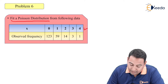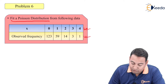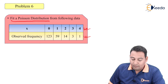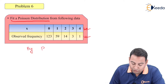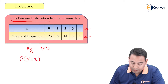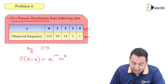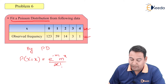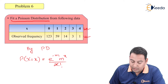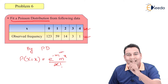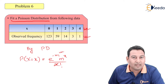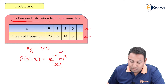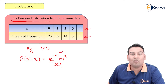X is the random variable and we have the observed frequency. We need to find the probability at x equal to 0, 1, 2, 3, and 4 by Poisson Distribution. The formula is e raised to minus m, times m raised to x, upon x factorial. There is only one unknown, that is m. We need to find m. And what is m? m equals np. But here we do not know p — we know n but we do not know p.